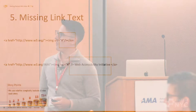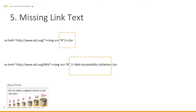The next issue is missing link text. The example on top doesn't have any link text, and the one on the bottom does. This is a very simple fix — if you're navigating your website with a screen reader, you're not going to be able to tell that this says 'Web Accessibility Initiative.' Adding this into the HTML is probably a really quick win.